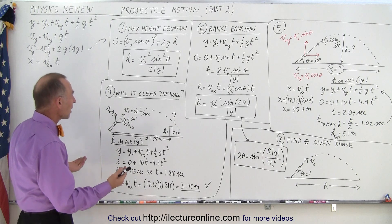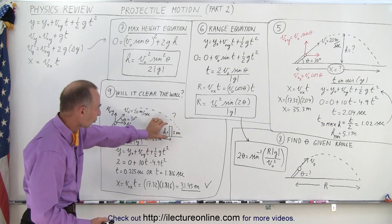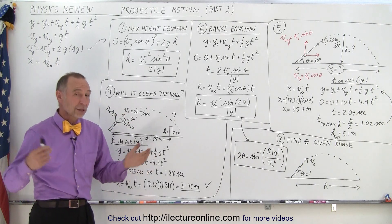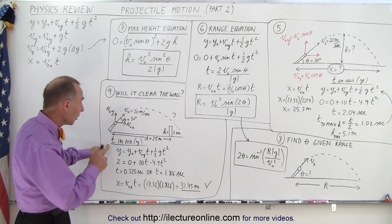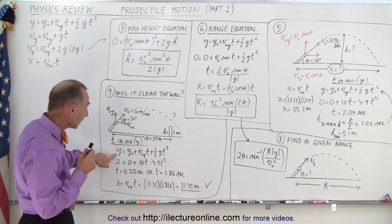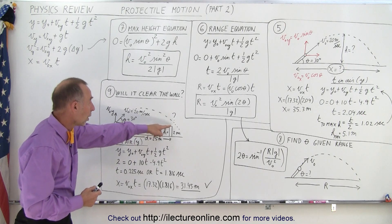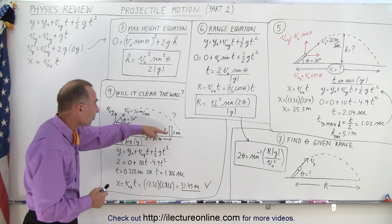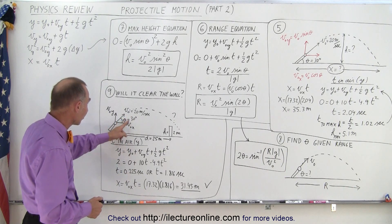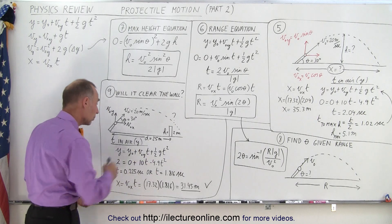Finally, you might be asked: will this projectile clear a wall? Say at 25 meters distance there's a wall two meters high, and you shoot a projectile at 30 degrees with an initial velocity of 20 meters per second. Again you find time in the air, but this time you want the time when you reach the distance of the wall. Set the height equal to two meters: initial height is zero, initial velocity in the y-direction is 20 times sine of 30 degrees, which is 10, plus one-half g t-squared, with g equal to negative 9.8 — giving you a quadratic equation.